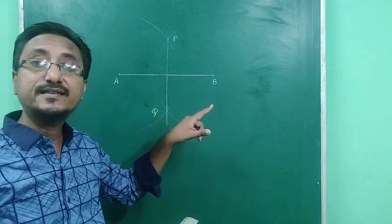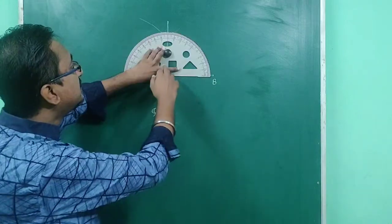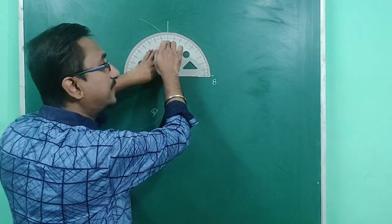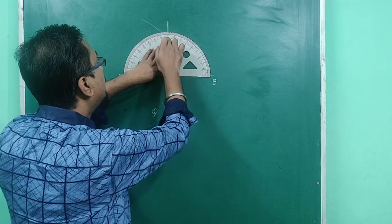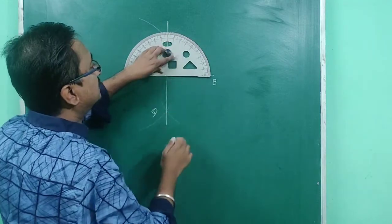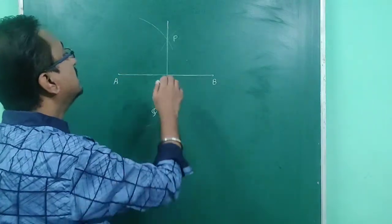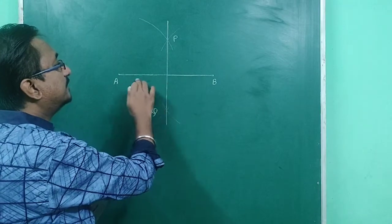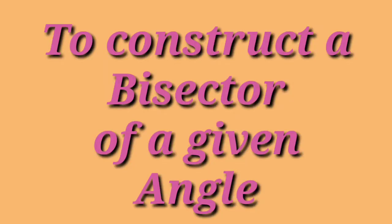You can see the angle is 90 degrees, so our construction is perfect. We have found the perpendicular bisector of line AB. Now let's draw the bisector of a given angle.